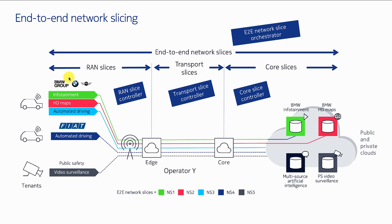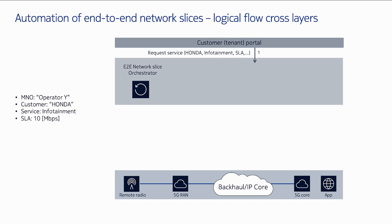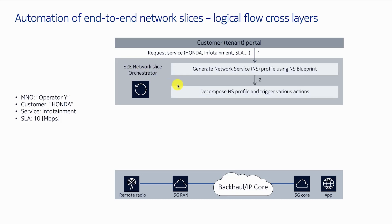Let's assume I want to create the green network. The operator is Y, the customer is Honda, which needs an end-to-end network slice for infotainment, with an SLA budget of 10 megabits per second. The customer portal sends a request to the orchestrator asking for that end-to-end network slice. The orchestrator goes through the network slice blueprints or templates to generate a specific network slice profile for that customer.